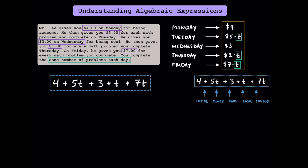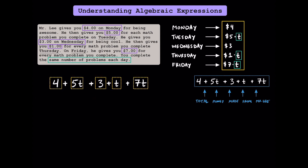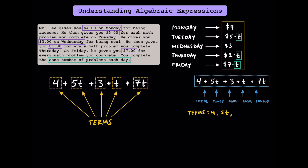Let's look at this algebraic expression in a little more detail. While you'll eventually work with expressions with subtraction signs, this video is going to be focusing on just using addition signs. Each plus sign separates something called a term. Each of these are called terms. While different algebraic expressions have different numbers of terms, this particular one has five terms. The terms here are 4, 5t, 3t, and 7t.